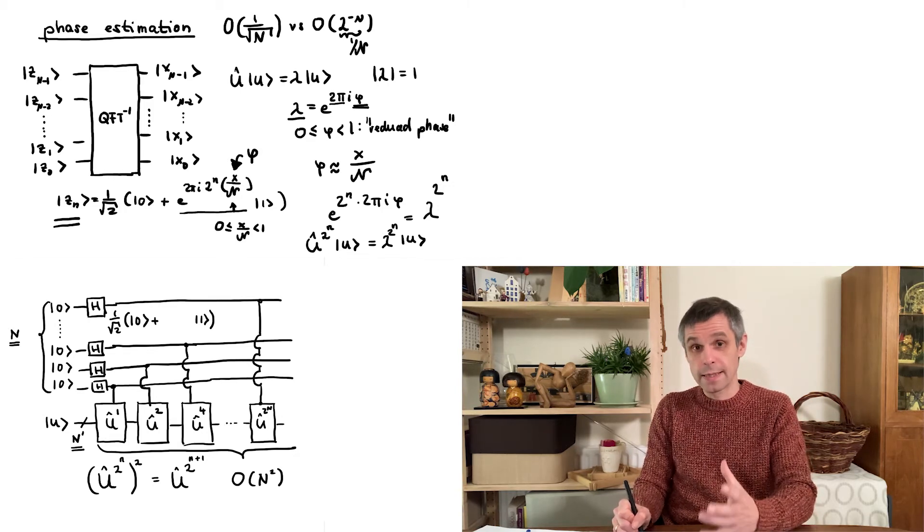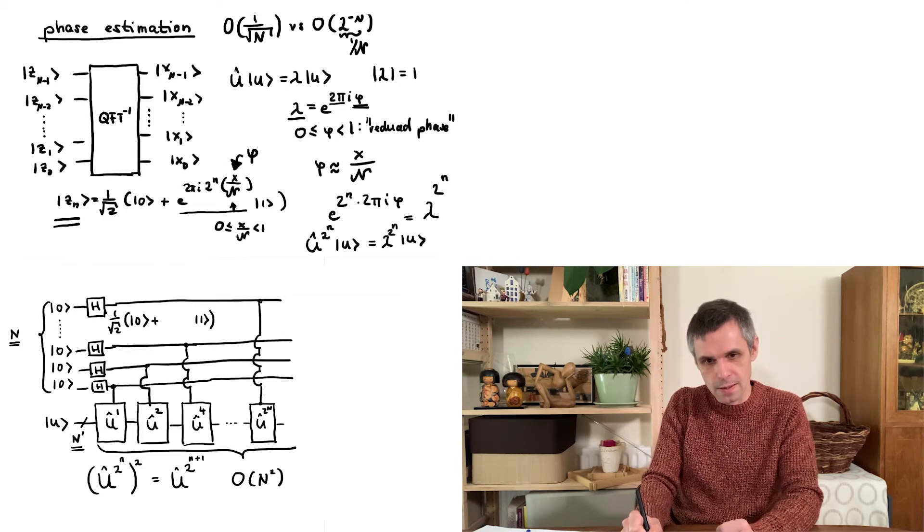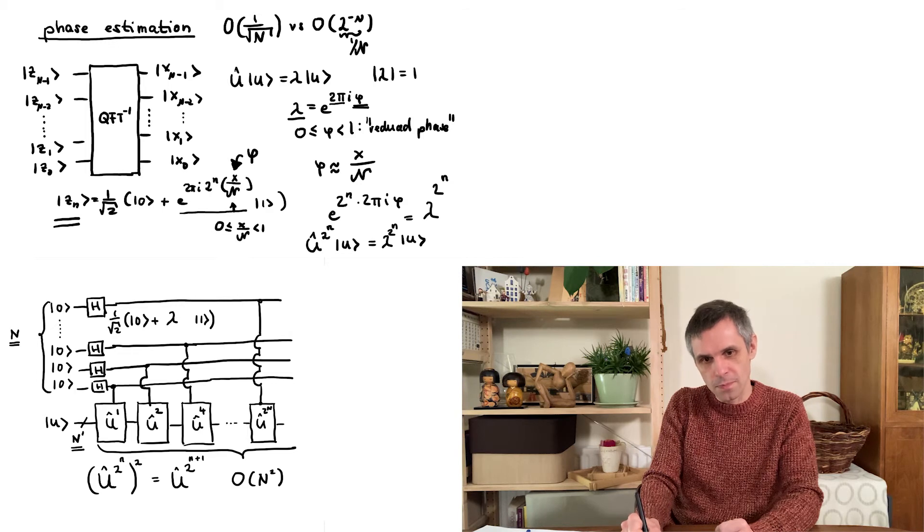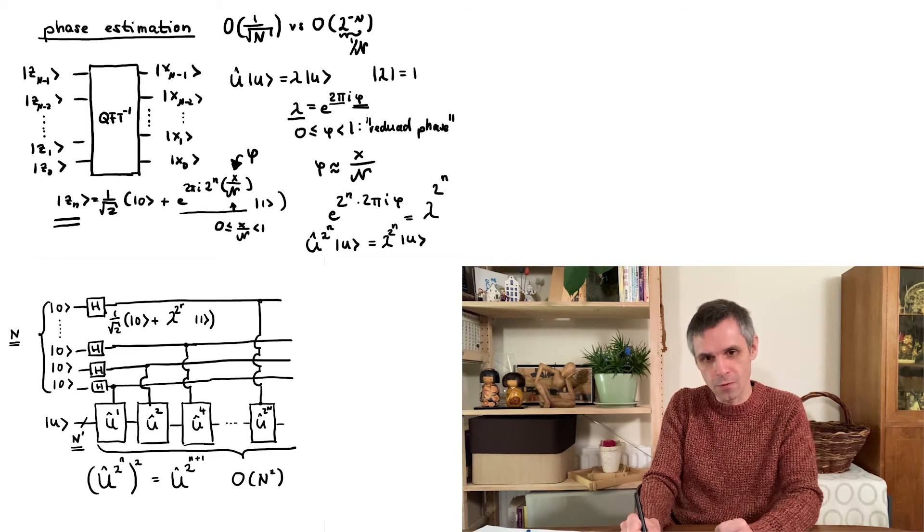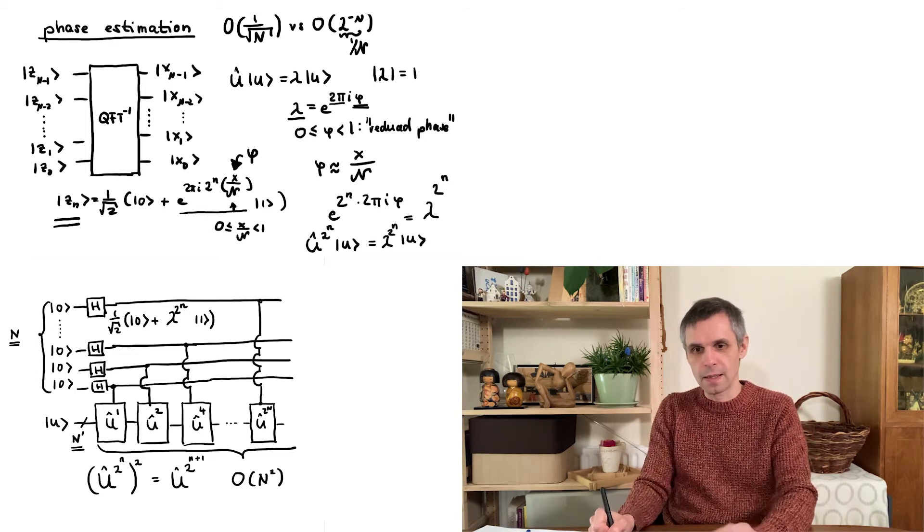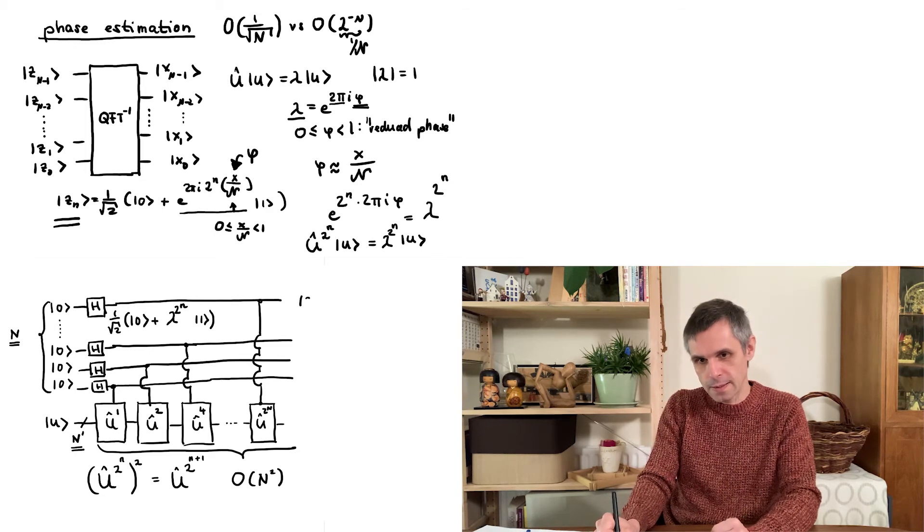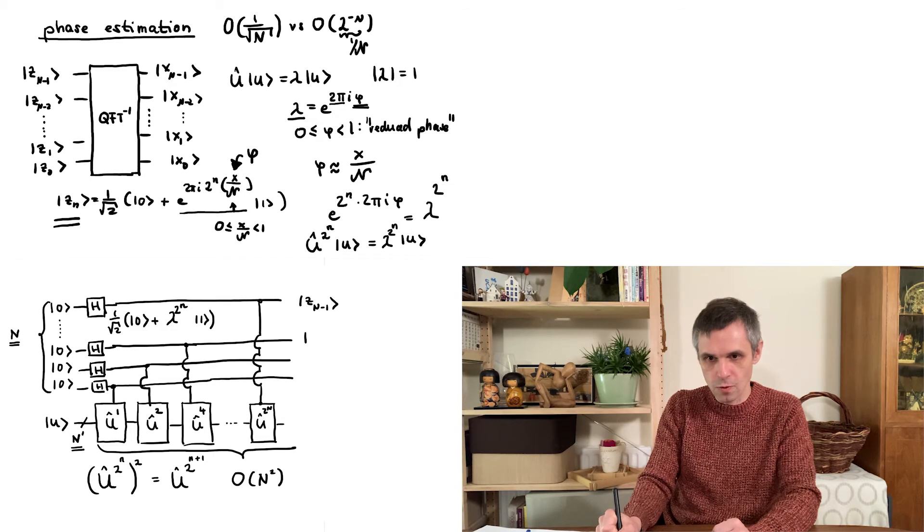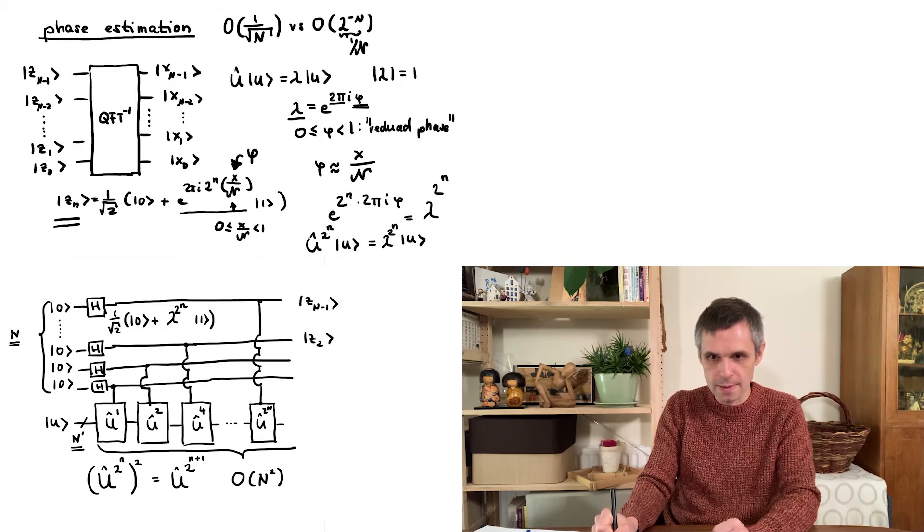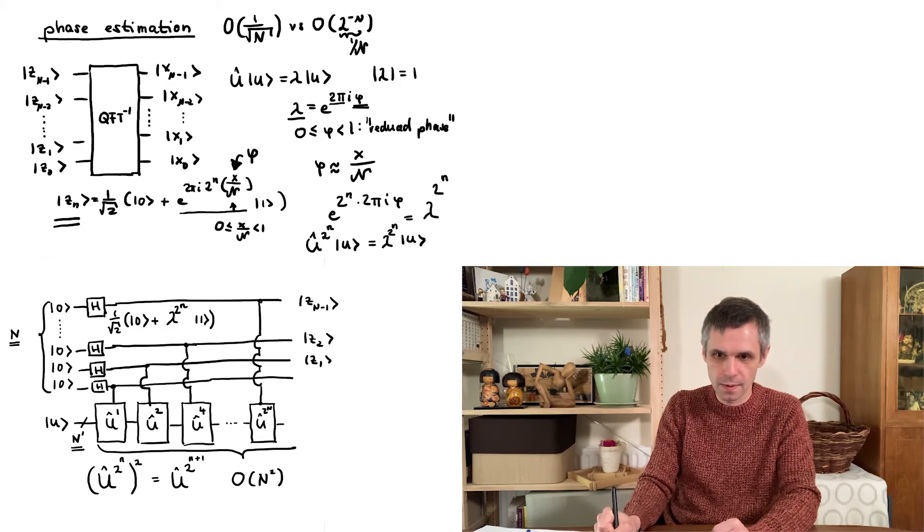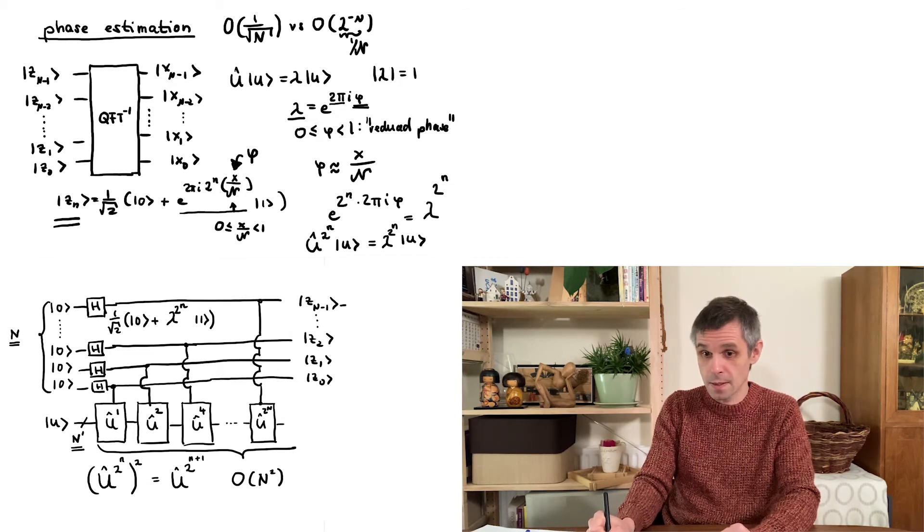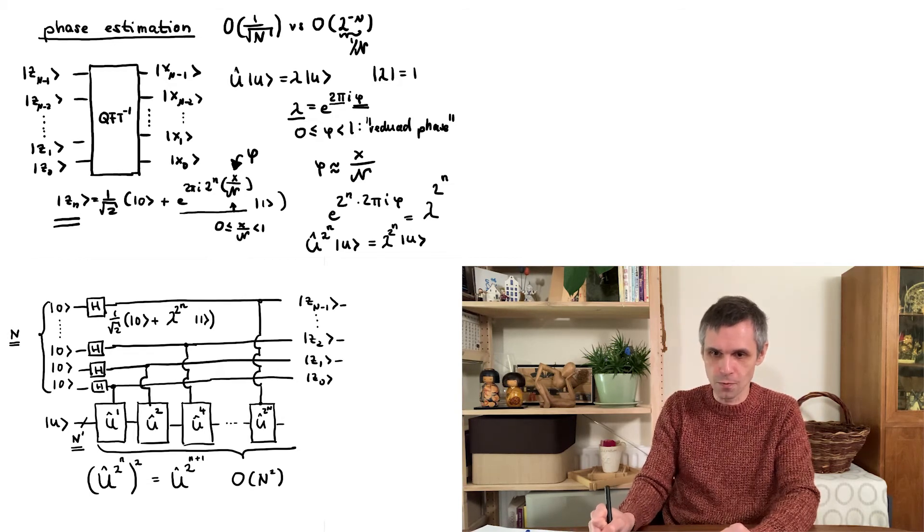And what we then have achieved is to place all these quantum bits individually into these states here with the factor of lambda to the power 2 to the n in front of the state 1. And therefore, what we really have obtained are states which look like the output of a quantum Fourier transform, these states z here.